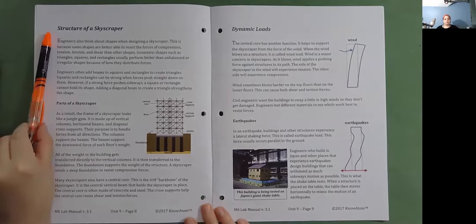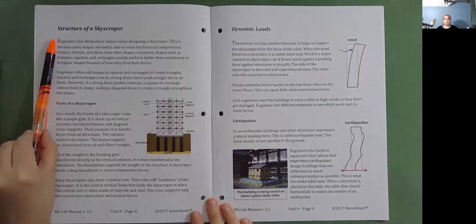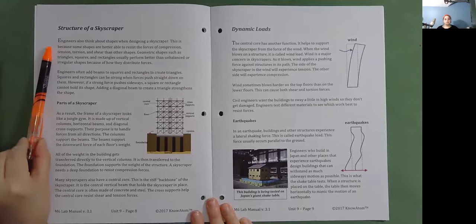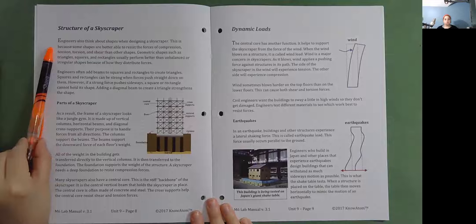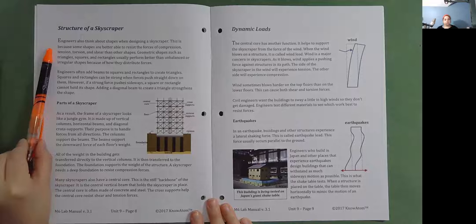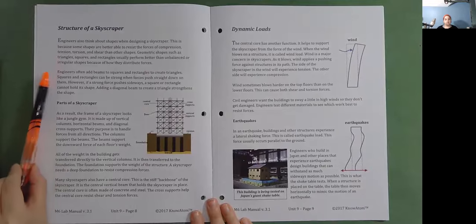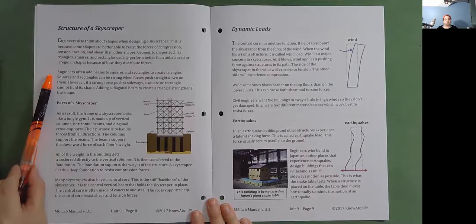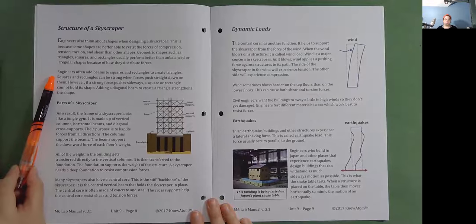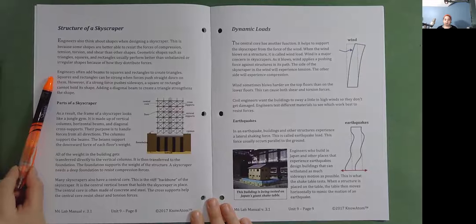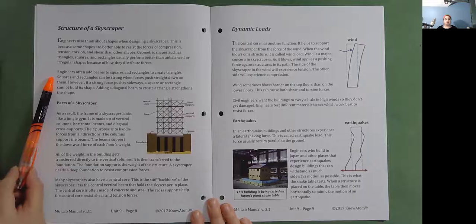Structure of a skyscraper. Engineers also think about shapes when designing a skyscraper. This is because some shapes are better able to resist the forces of compression, tension, torsion, and shear than other shapes. Geometric shapes such as triangles, squares, and rectangles usually perform better than unbalanced or irregular shapes because of how they distribute forces. Engineers often add beams to squares and rectangles to create triangles. Squares and rectangles can be strong when forces push straight down on them. However, if a strong force pushes sideways, a square or rectangle cannot hold its shape. Adding a diagonal beam to create a triangle strengthens the shape.